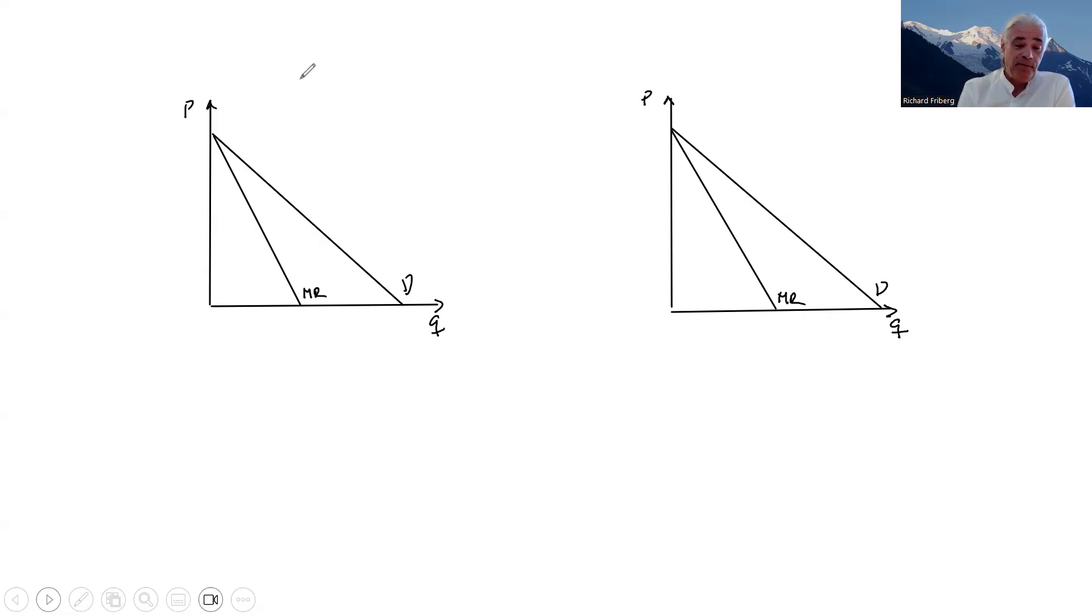We have one firm we can call H, as in high productivity. What does being highly productive here mean? Well, it means having a low marginal cost.